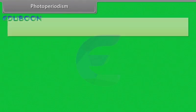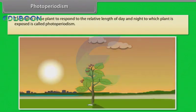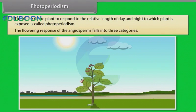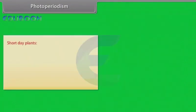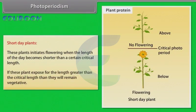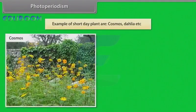Photoperiodism: The ability of plants to respond to the relative length of day and night to which the plant is exposed is called photoperiodism. The flowering response of angiosperms falls into three categories. Short day plants — these plants initiate flowering when the length of the day becomes shorter than a certain critical length. If these plants are exposed to day length greater than the critical length, they will remain vegetative. Examples of short day plants: Cosmos, dahlia, etc.